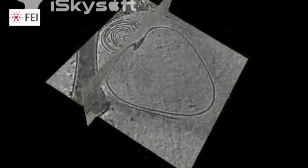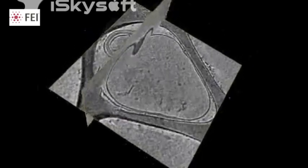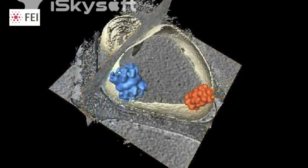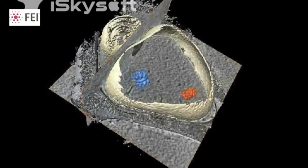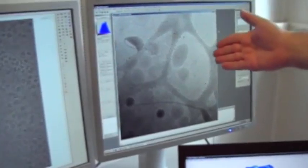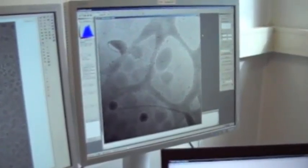In other cases you may want to have a look at a much larger specimen, and in that case another technique called cryo-electron tomography can be used to image much larger structures like organelles or lipid vesicles like here on the screen.